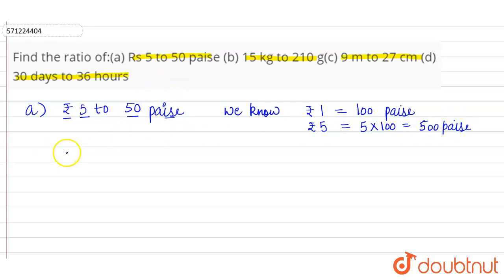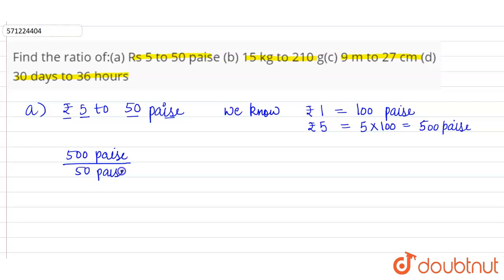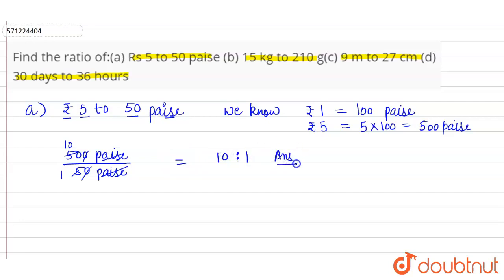Now we can find the ratio: Rs 5 is 500 paise, divided by 50 paise. Paise cancels with paise, giving us 500 ÷ 50, which simplifies to 10 ratio 1. This is the answer for part (a).